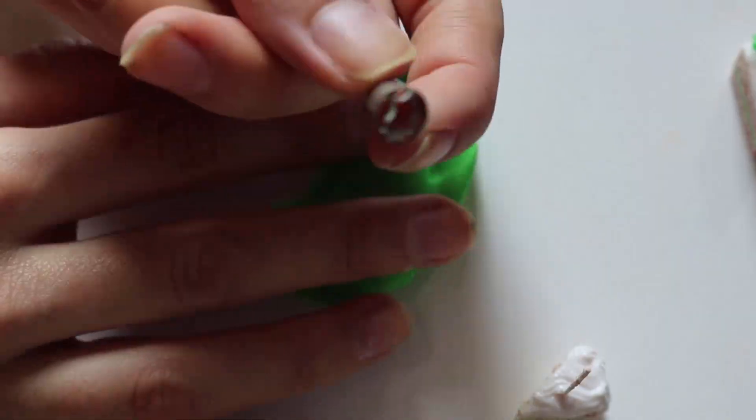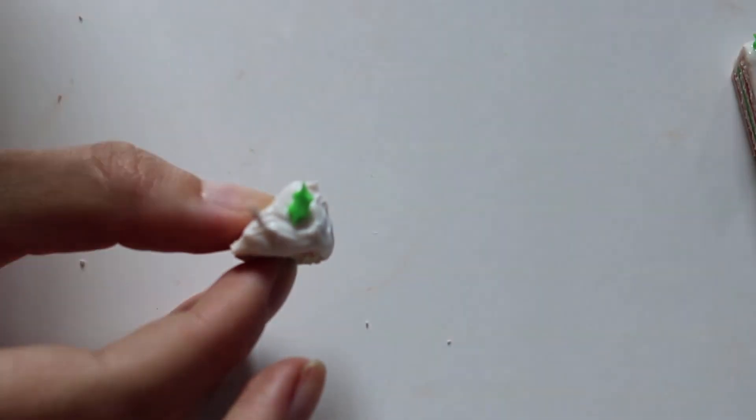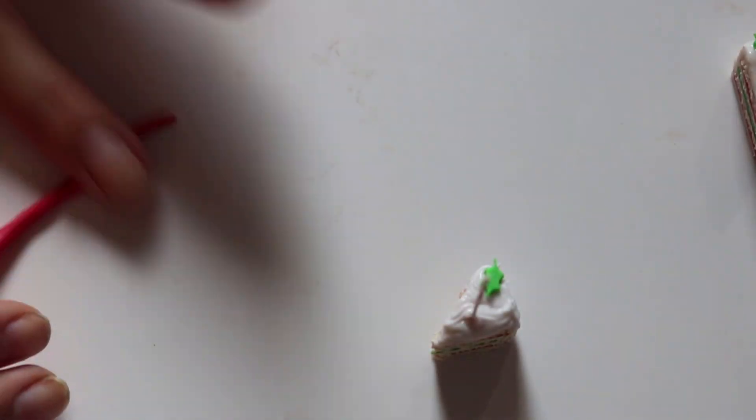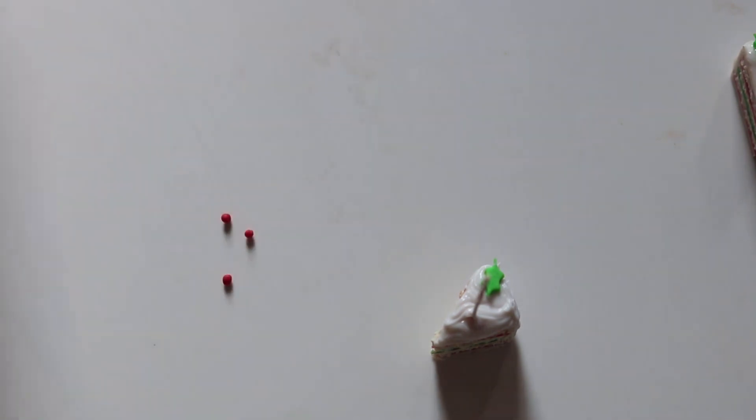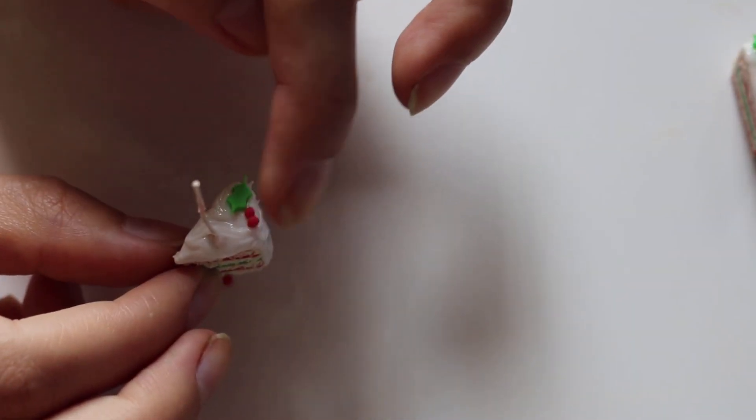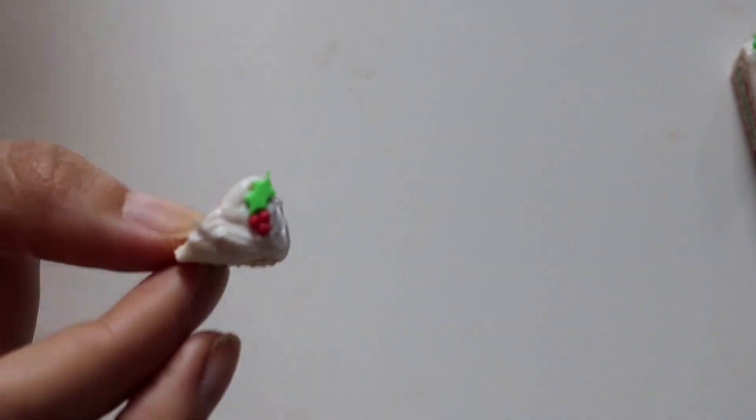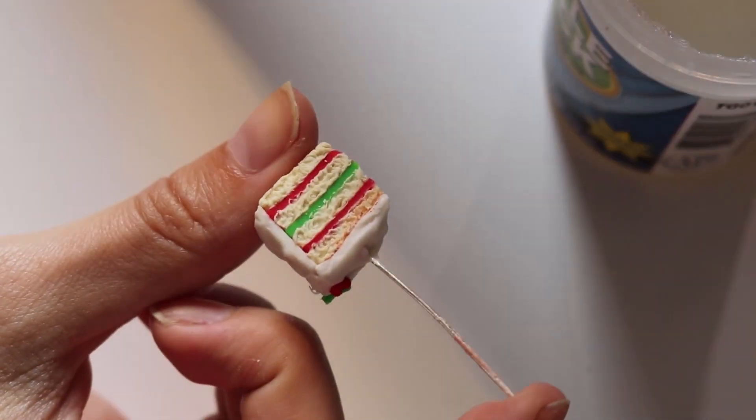So now it's time to take the green that we've already created, and I have a little cookie cutter that's the perfect size for a little holly leaf. And then I'm going to be just rolling out a really small snake of the red, and making three little berries, and then adding that right next to the leaf. Then you'll bake that again.